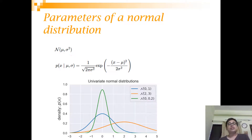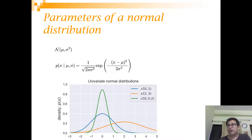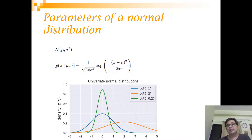Let's look at some example normal distributions. The simplest is the blue one, which has a mean of zero — you can see the peak at zero — and a standard deviation of one, giving us the standard normal distribution. The orange one has a mean of two, so the peak happens at two, and the standard deviation is three, which is why the spread is much higher. The last one has a mean of zero with a standard deviation of 0.2, so the spread is much lesser. Just knowing these two parameters lets you understand the distribution completely.